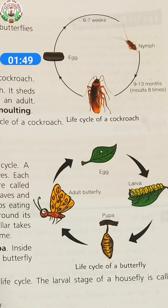Summary of life cycles: The life cycle of a hen has three stages — hen, egg, and chick. The life cycle of a frog has three stages — egg, tadpole, and adult frog. The life cycle of reptiles has four stages — egg, hatching egg, hatchling, and adult. The life cycle of a cockroach has three stages — egg, nymph, and adult cockroach.